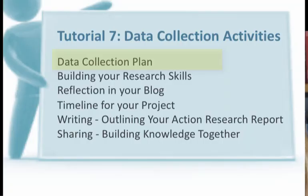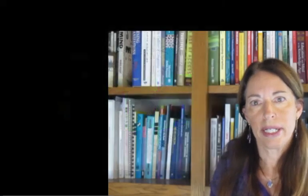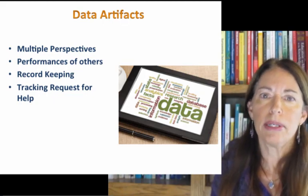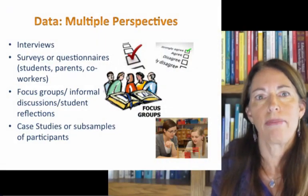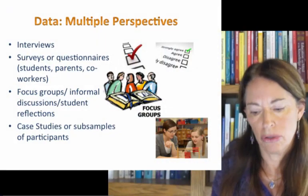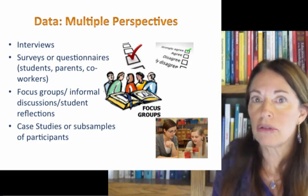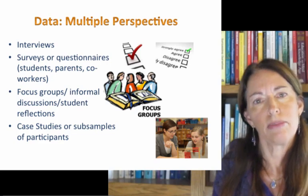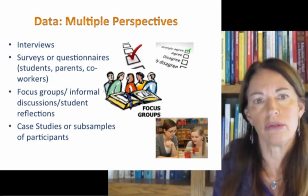Activity one is your data collection plan. The first thing you'll have to decide is what data you are going to collect. You can collect what people think, say, or feel about what happened by using interviews, questionnaires, or surveys. Focus groups can be effective. Those are all different ways of getting at people's perspectives in the setting, and they are commonly used in action research.